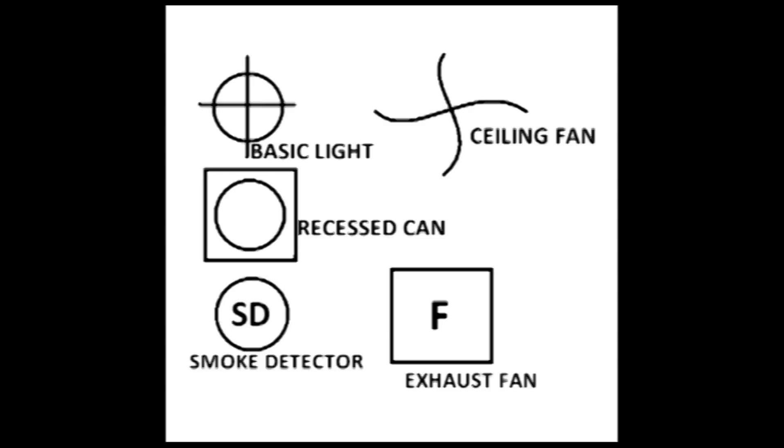The most basic is the light box, which is a circle with a cross through it. Followed by a recessed can, which is a circle with a square around it. We then have a smoke detector, which is SD with a circle around it. Followed by a ceiling fan, which is kind of a cheesy looking fan. And then we have an exhaust fan, which is a square with an F in it.